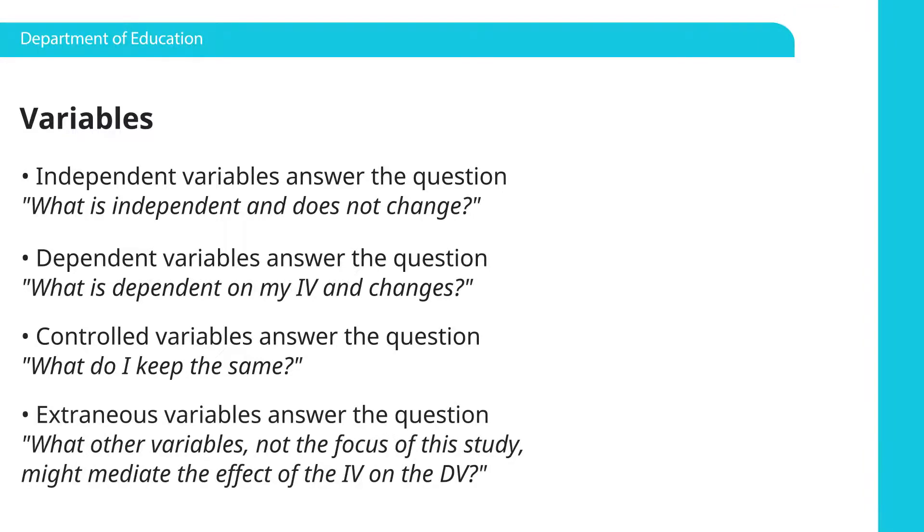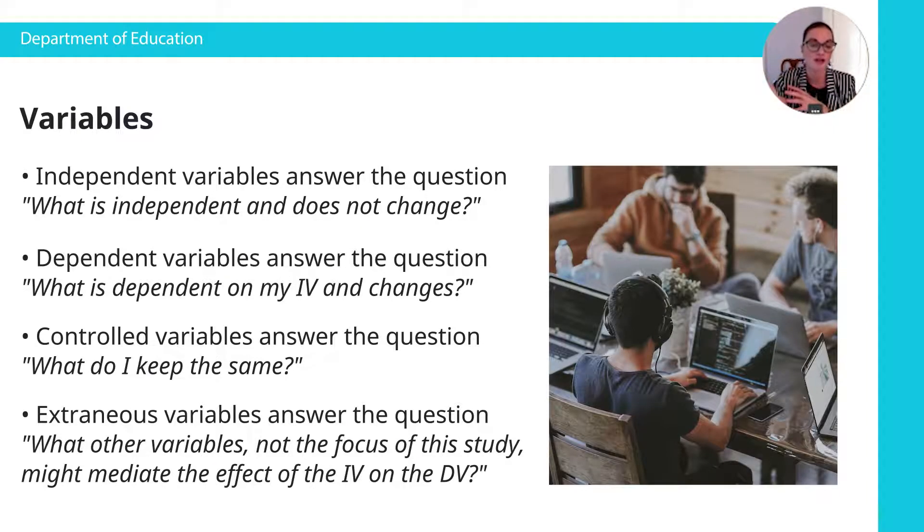Extraneous variables answer the question, what other variables, not the focus of the study, might mediate the effect of the independent variable on the dependent variable? In this case, you may argue and say, what about socioeconomic status? In the research, it shows that students who are from a more affluent background will have more resources. They'll have more exposure to books. Their parents may have very professional jobs and so expose their children to more scientific concepts in our science example. So you could say, in this study, we're going to look at the difference in learning outcomes according to gender, but we're going to control for or take into consideration the extraneous variable of socioeconomic status. So we're not focusing on socioeconomic status in our study, but we're taking that into account because that may affect the learning outcomes in the science classroom.